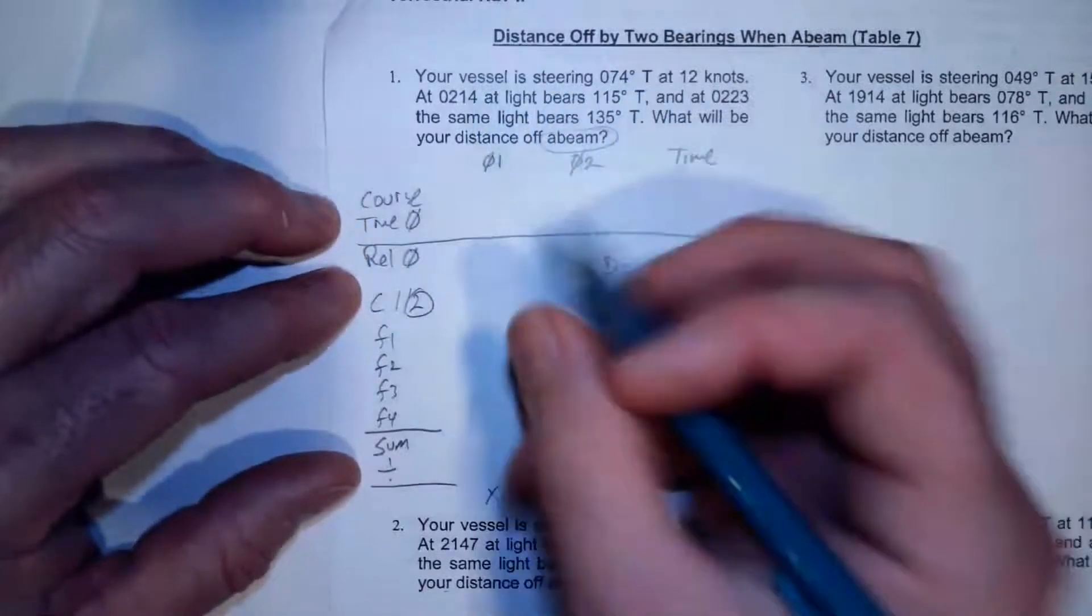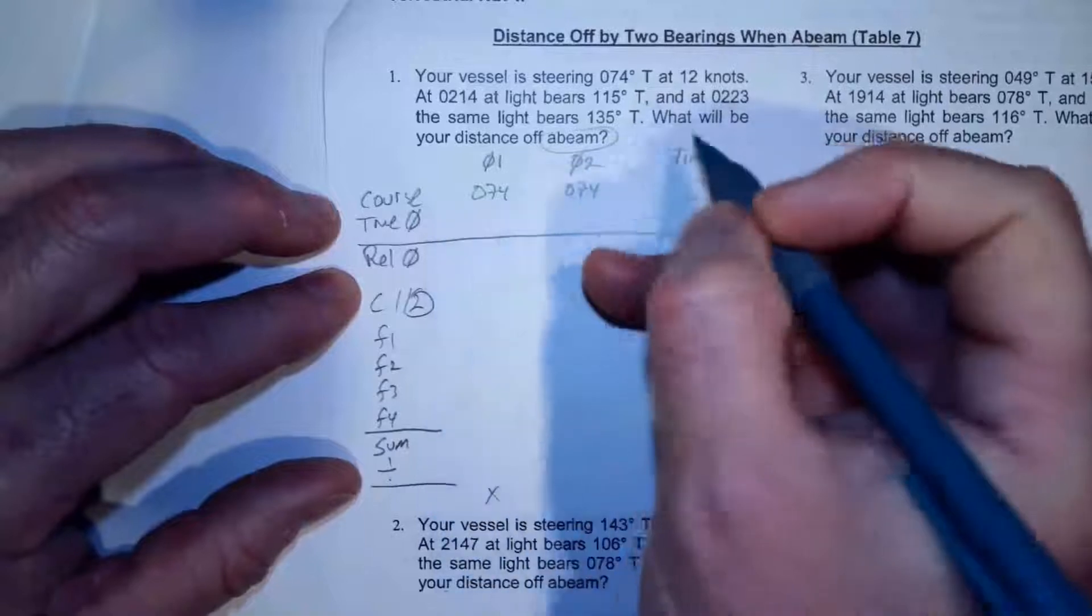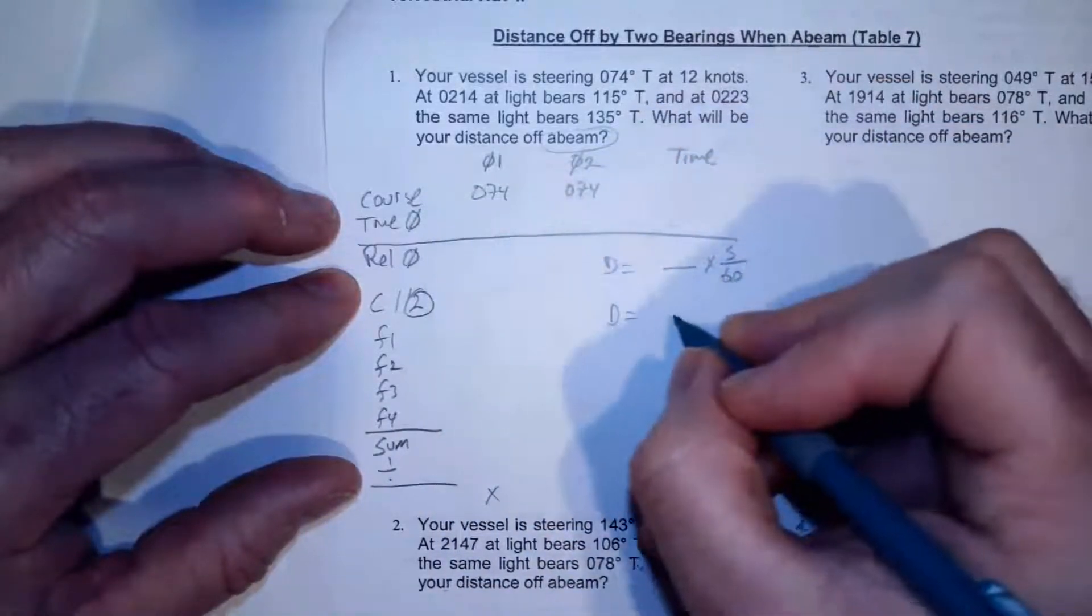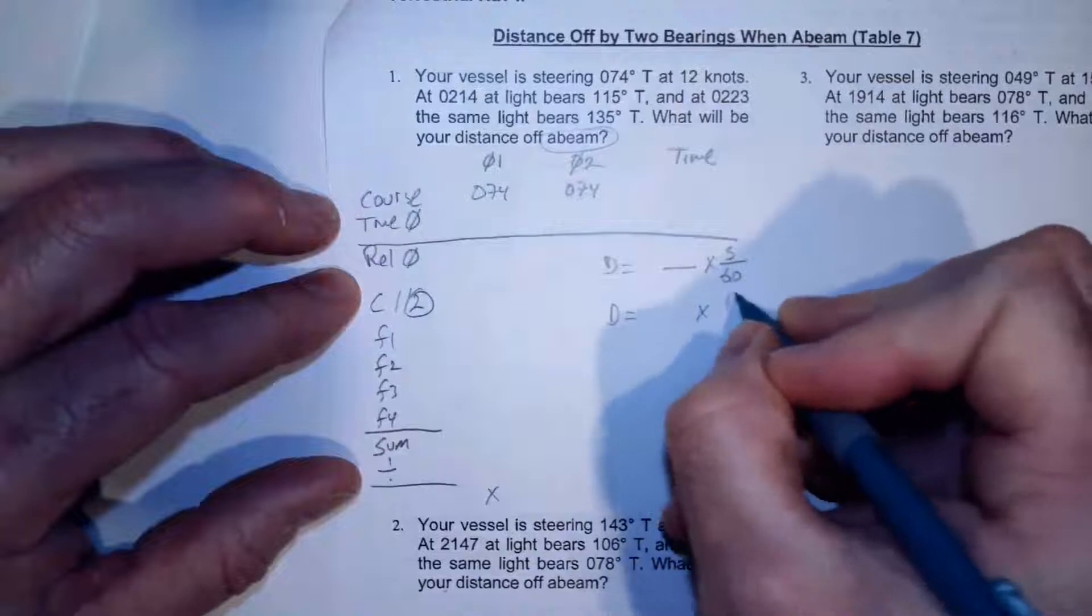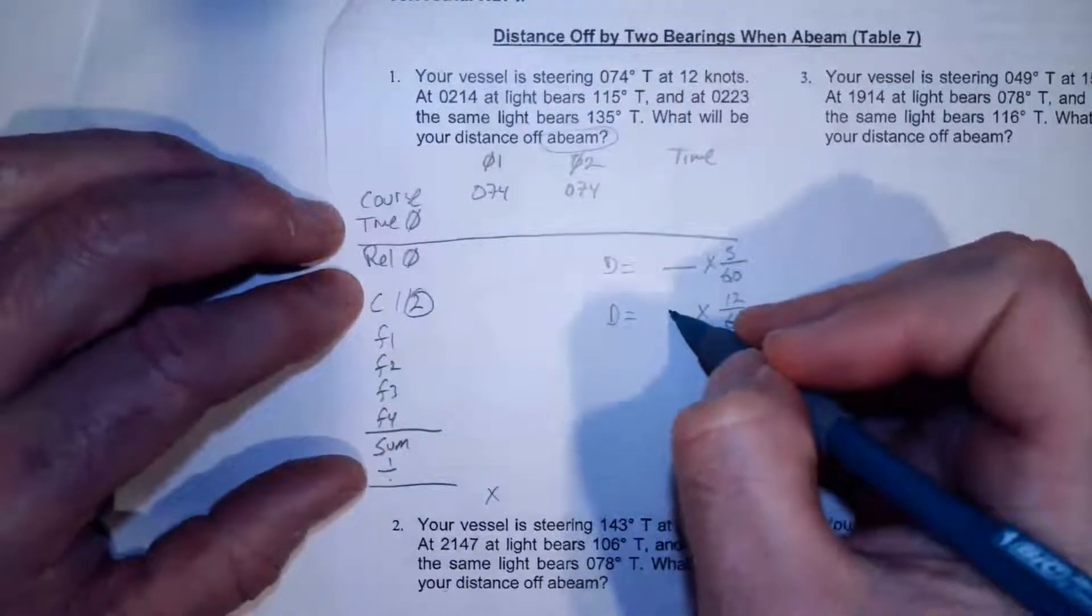So let's go here. Your vessel is steering 074. So that's my course. So that goes here, both times at 12 knots. So my speed is 12 knots. So that's going to be 12 over 60. Now I just need to calculate the time. I'm going to stick that there. We'll get there in just a minute.